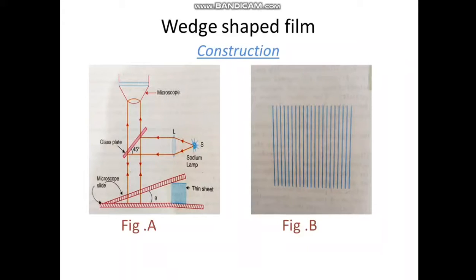In this diagram, we are able to see how the wedge-shaped film forms. In this construction, the arrangement is given for observing the interference pattern in a wedge-shaped film.